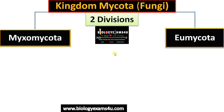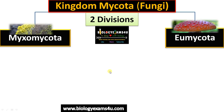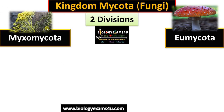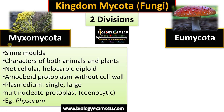Ainsworth gave fungi the status of a kingdom — Kingdom Mycota. It is divided into two divisions: Myxomycota and Eumycota. Myxomycota includes slime molds, whereas Eumycota are the true fungi. At present, Myxomycota is not included in fungi; it belongs to Protista.